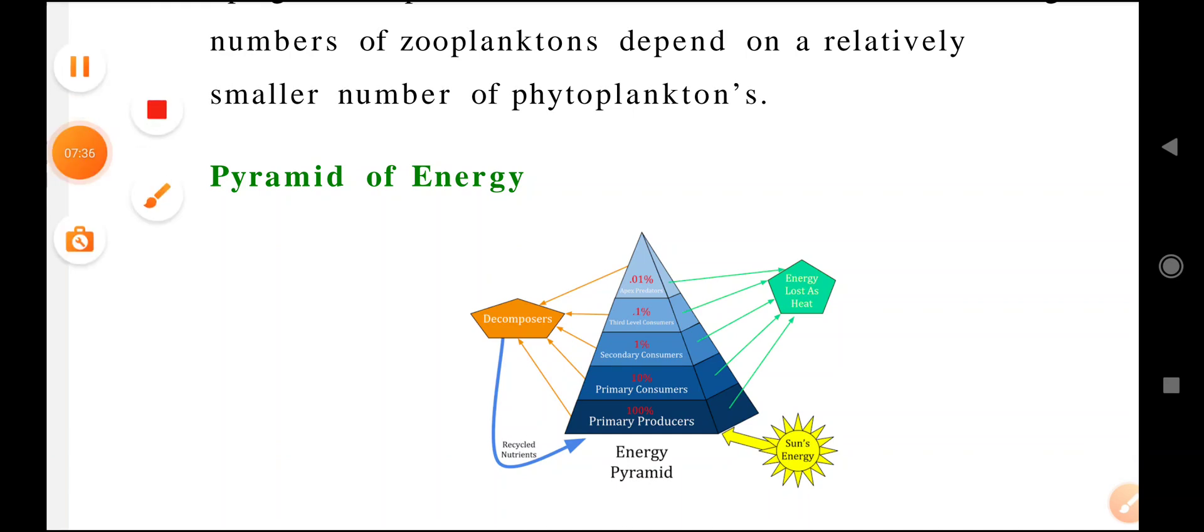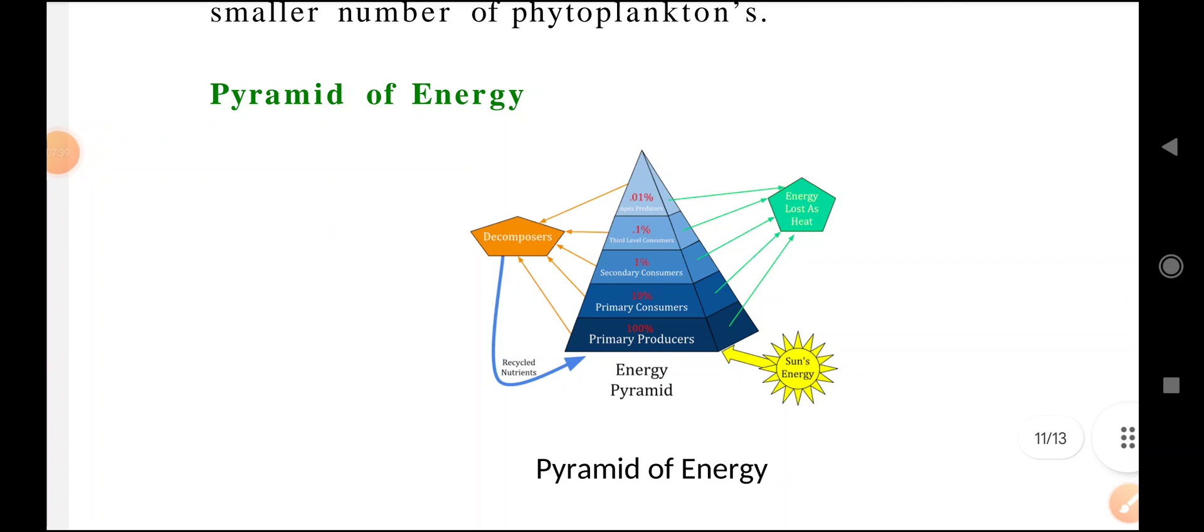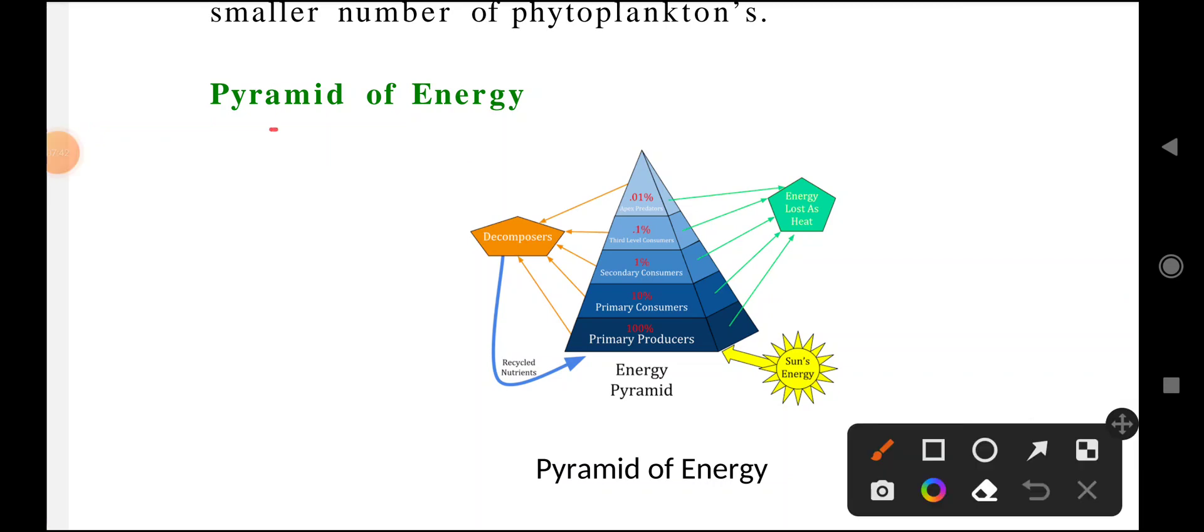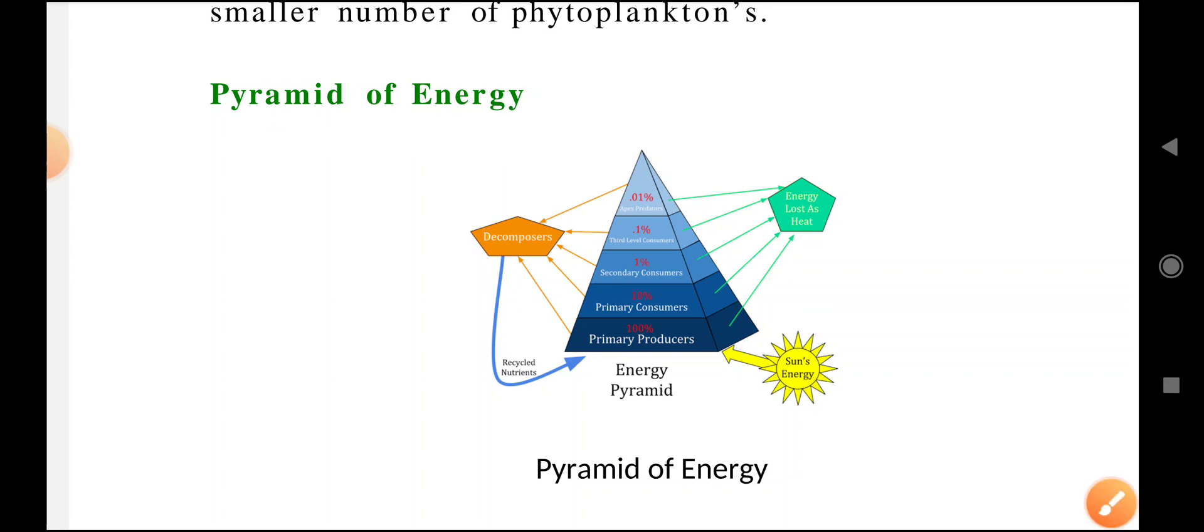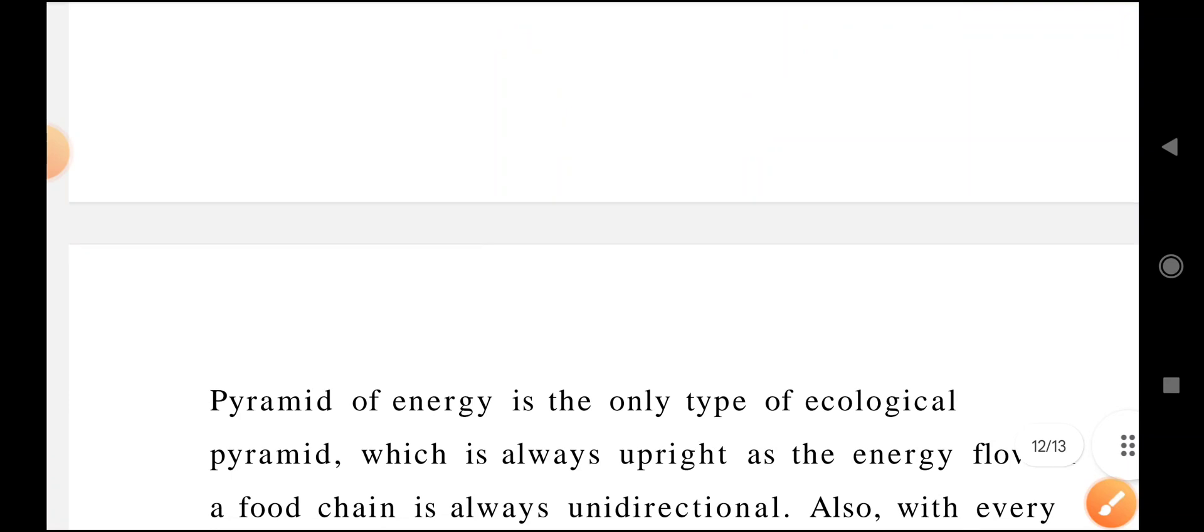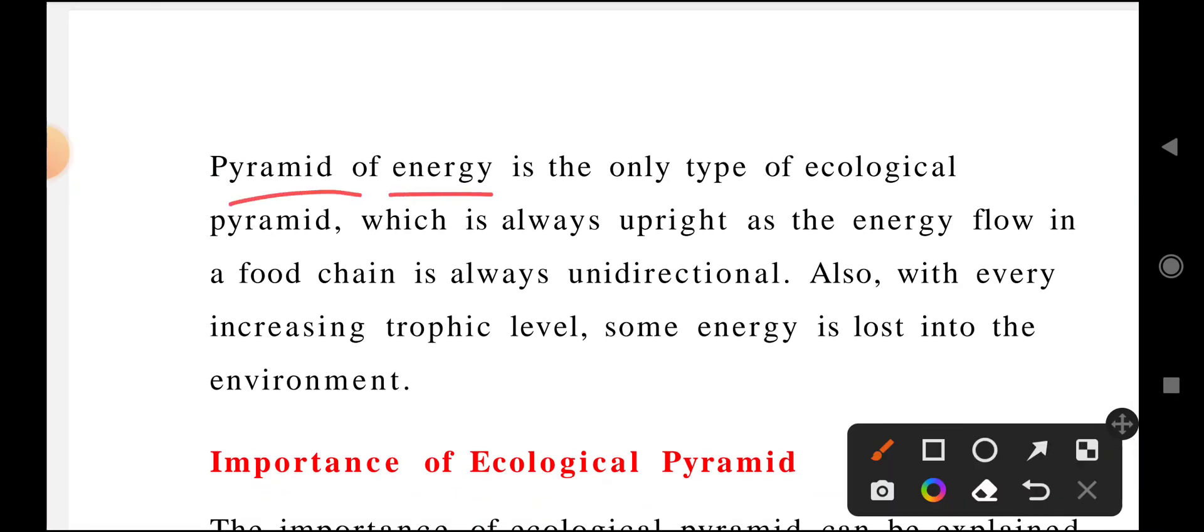Next is energy. How much energy they release - based on that, this pyramid exists. The pyramid of energy is the only type of ecological pyramid which is always upright, as energy flow in the food chain is always unidirectional.